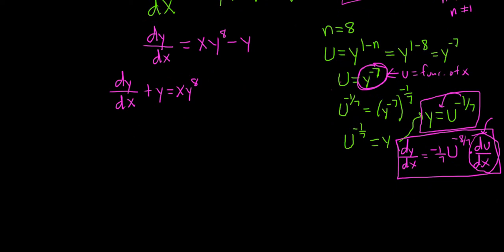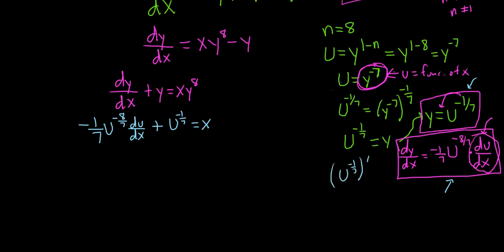Now we carefully substitute everything into the DE. dy/dx is (−1/7)·u^(−8/7)·(du/dx); y is u^(−1/7); and y^8 means we raise u^(−1/7) to the 8th power, multiplying exponents to get u^(−8/7). So substituting gives: (−1/7)·u^(−8/7)·(du/dx) plus u^(−1/7) equals x·u^(−8/7).